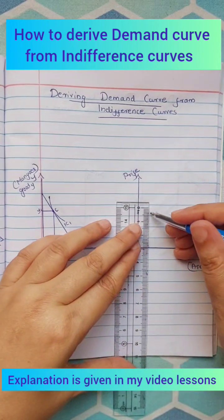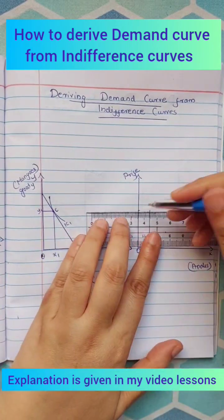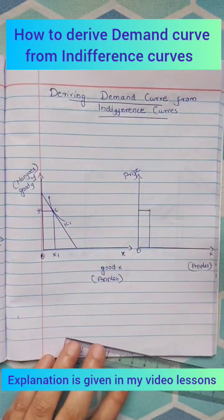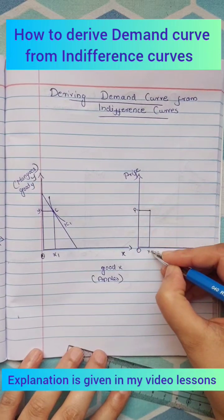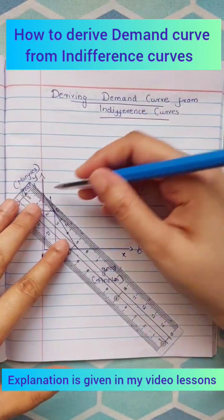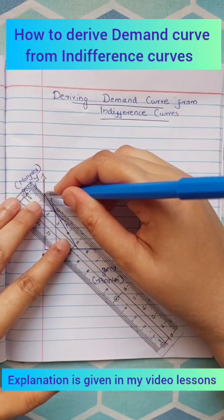x-axis shows the quantities of apples and y-axis shows the price of apples. We plot P1 and x1, which is the first point on the demand curve.